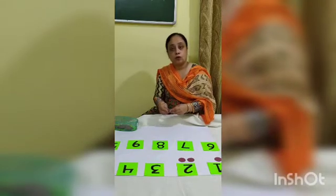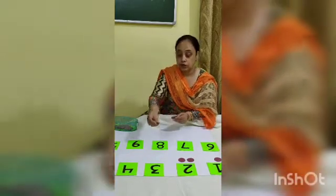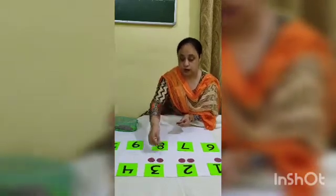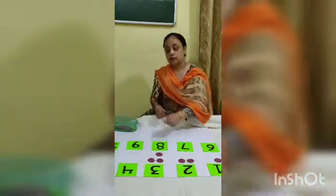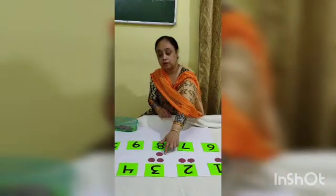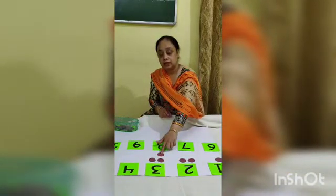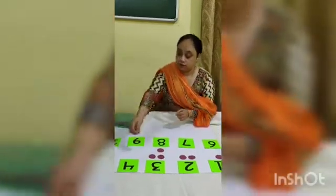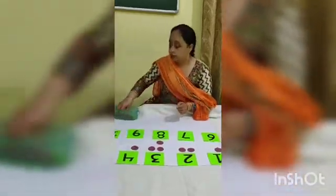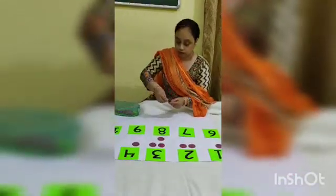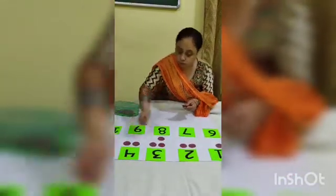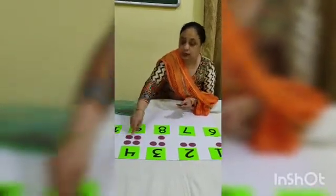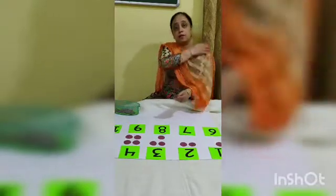Similarly, for number 3, we place three circles: 1, 2 and 3. Since 3 is an odd number, one circle is remaining and does not have a pair. For number 4, we place four circles: 1, 2, 3, 4. Here all the circles are in pairs.